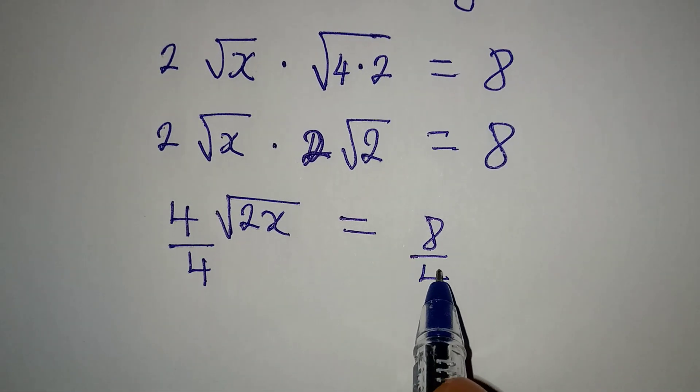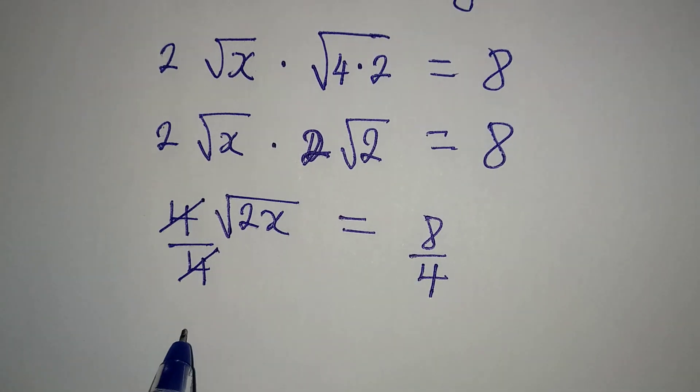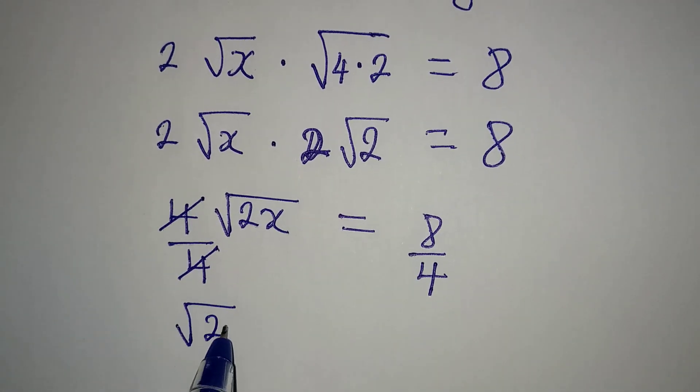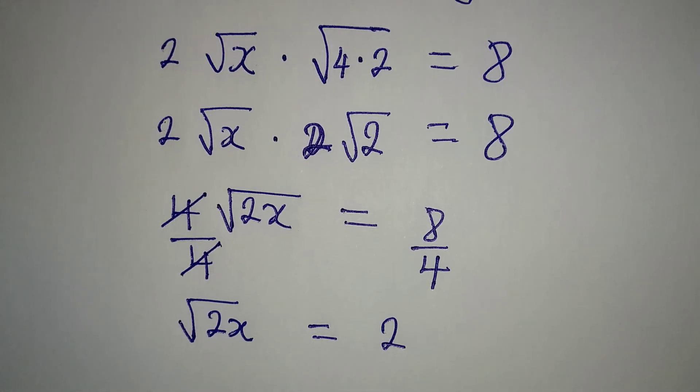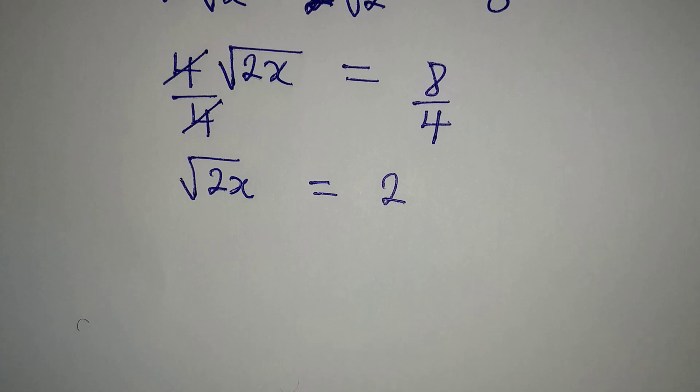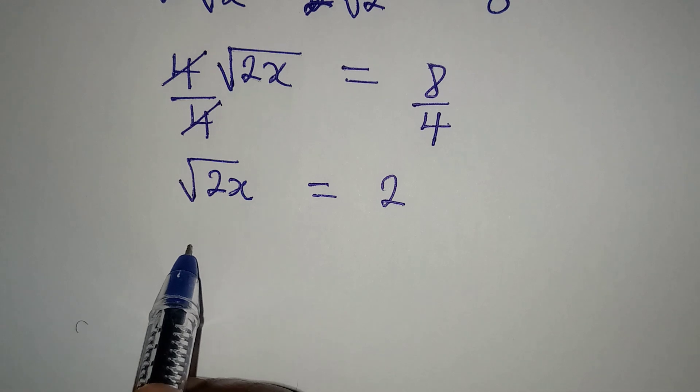Divide this by 4, and then √(2x) is equal to 2, that is 8 divided by 4. To get the value of x, we need to get rid of the square root.